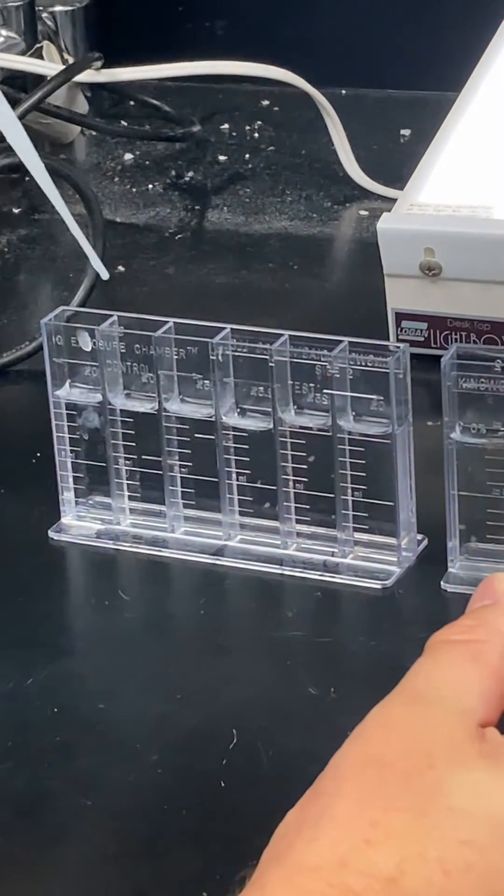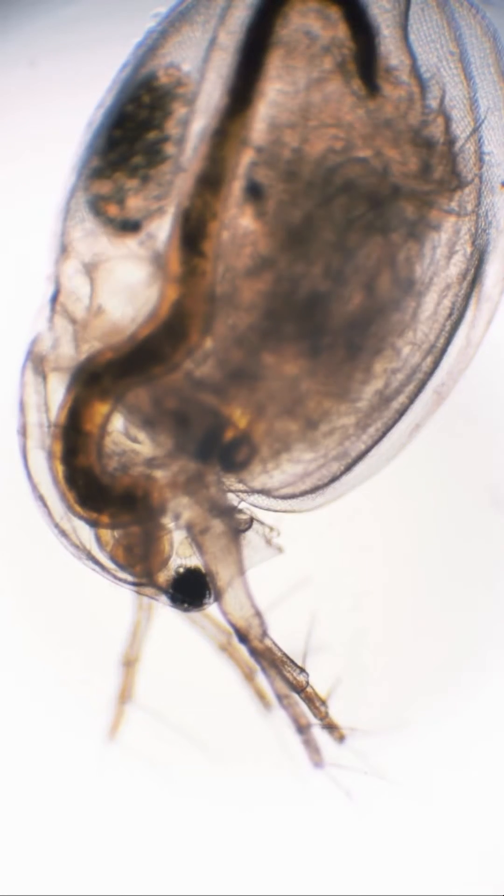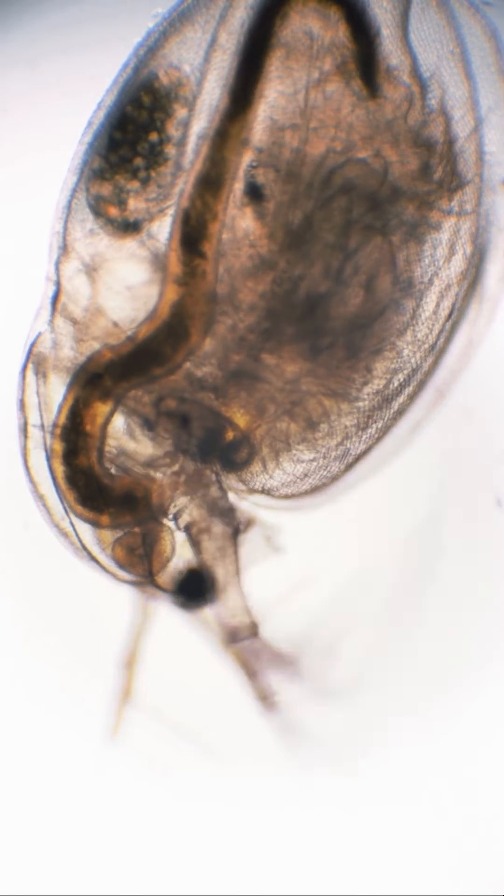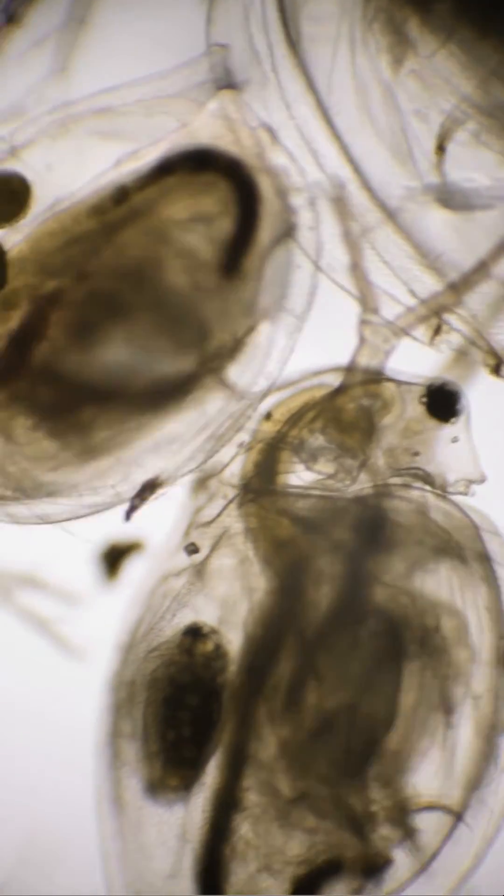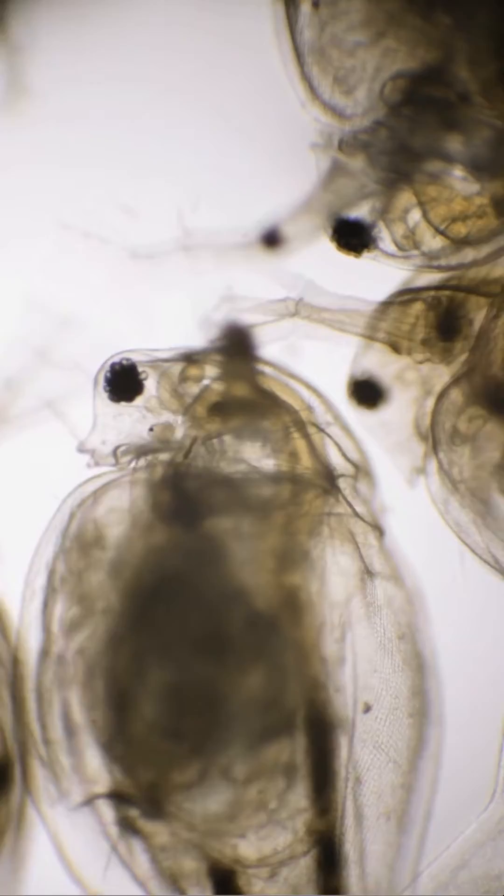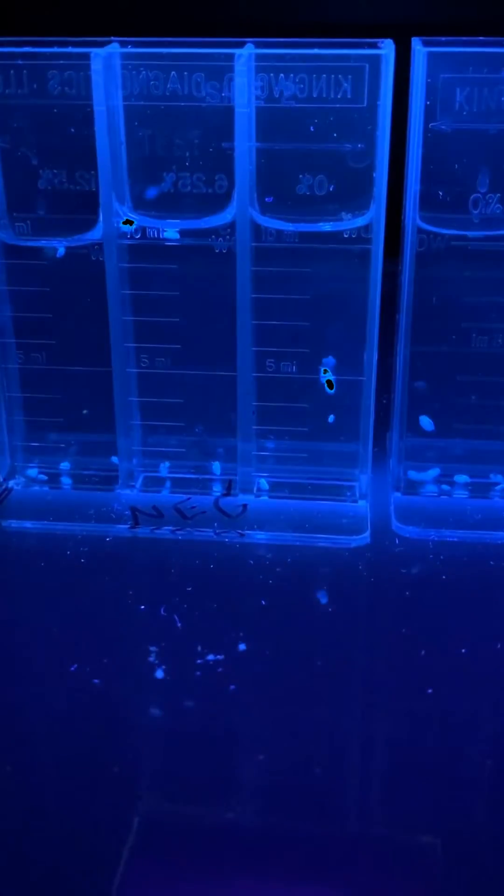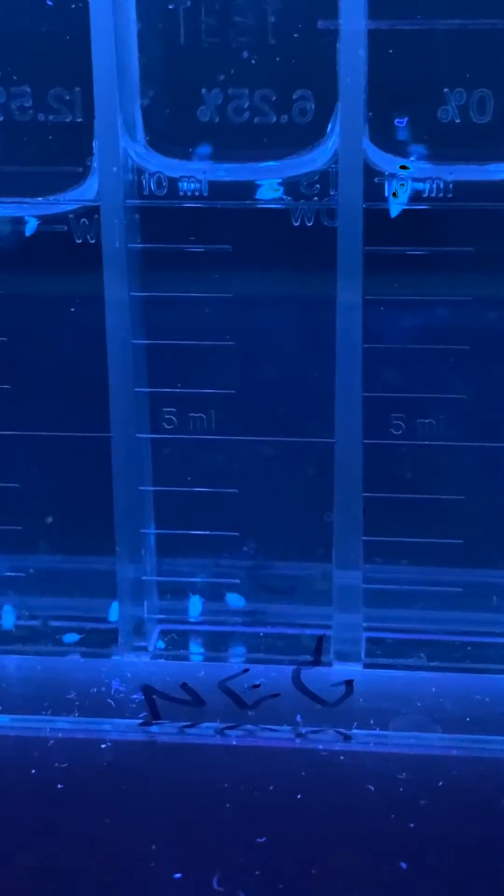The test is based on the idea that if a cladoceran or water flea is impaired, it will not eat. After an hour in potentially impaired water, if it's negative, they will eat and fluoresce because the sugar substrate has a fluorescent tag in it.